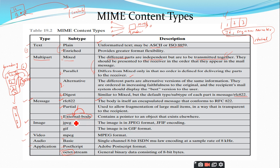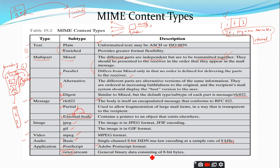Image types include JPEG and GIF. Video uses the MPEG format. Audio uses the basic format defined as single channel, 8-bit ISDN with a sample rate of 8 kHz. The application type refers to different kinds of data such as PostScript format, interpreted binary data, or information to be processed by mail-based applications. Octet-stream handles 8-bit byte binary data, unlike RFC 5322 which only deals with 7-bit data.